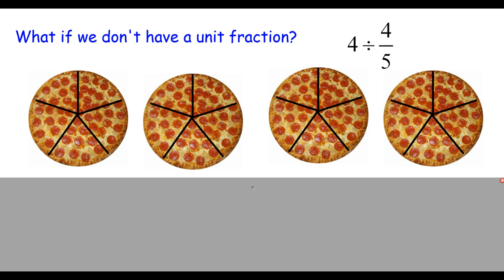Here we don't have a unit fraction. We have four pizzas, and we want to split them into groups of four-fifths of a pizza. Perhaps each pizza has five slices and we want to create groups of four slices each. How many possible groups could we create? It's a value being split into equal pieces — how many four-fifths of a pizza does it take to make four complete pizzas? We have a few processes we know how to use with fractions.